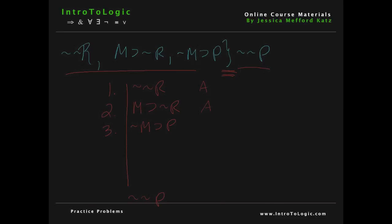The first thing you want to ask yourself, as always, is what can we do with our premises? What rules can we use on any of the premises? One of the first things that should pop out is that whenever you have a double negation, you can take that away using the rule of double negation. So let's try that — we can get r from line 1 using DN.